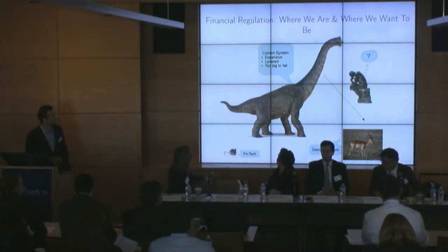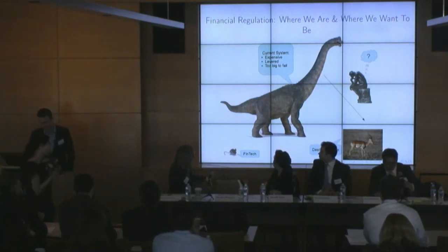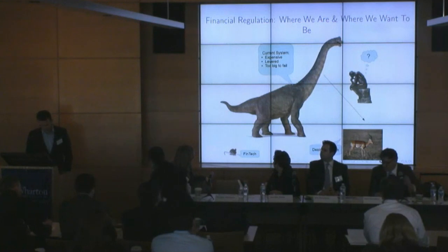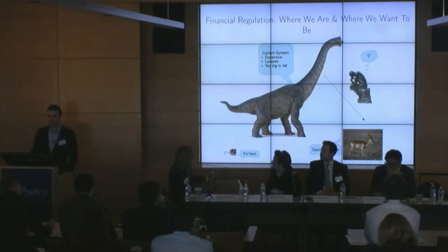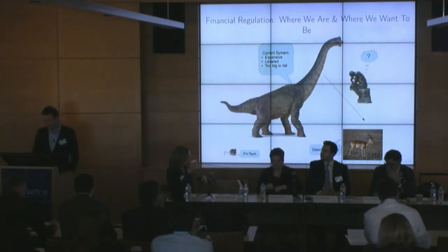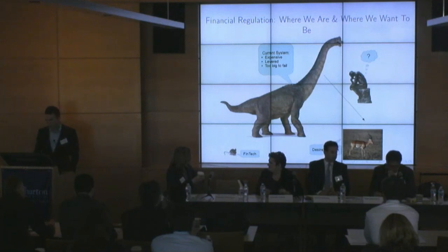The current system looks like this brachiosaurus: expensive, bloated, and too big to fail. There are many people around the world — like this Rodin thinker — including regulators and entrepreneurs, and I suppose many people in this room, trying to think about ways to make that system better. Many of them have a vision of what a better system could look like — maybe something like this antelope in the bottom right corner. The big question is: how do you get from A to B?